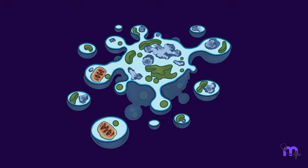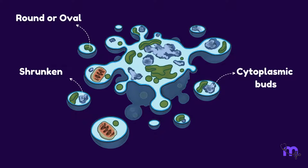An apoptotic cell is round, oval, shrunken, with cytoplasmic buds.